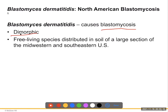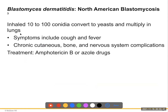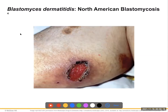Blastomyces dermatitidis causes blastomycosis — a dimorphic mold-to-yeast pathogen. Free-living species are found in soil of the large lakes region, midwest, and southeastern United States. It is inhaled; 10 to 20 conidia convert to yeast and multiply in the lungs. Symptoms include cough and fever with chronic cutaneous, bone, and nervous system complications including osteomyelitis and meningitis. Treatment is Amphotericin B and azole drugs.